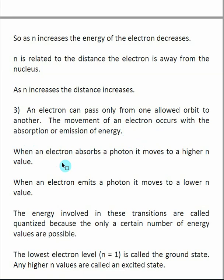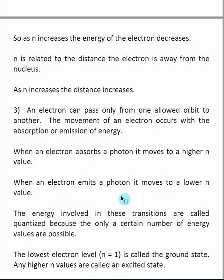If a hydrogen atom absorbs a photon, that kicks an electron to a higher n value — from a low n value to a high n value — meaning the hydrogen atom absorbed some energy. The exact opposite is also true: if an electron moves from a higher n value to a lower n value, the hydrogen atom is losing energy, and that energy comes out as the emission of a photon. So our hydrogen atom can either absorb or lose a photon, with a corresponding change in the electron's stationary state.